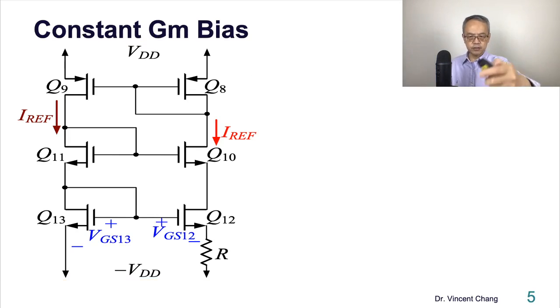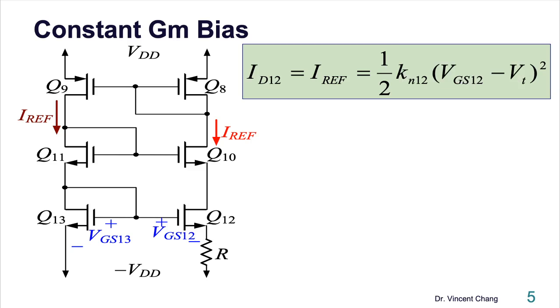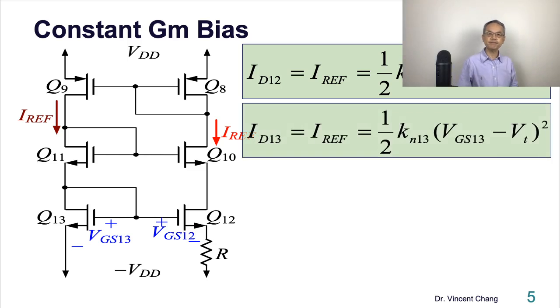Let's start with the transistor characteristic. On the right, Q12, we can put down: iD12 = iREF equals half k12 (vGS12 - VT)². Do the same thing for Q13. And then what?